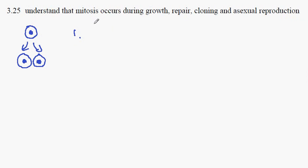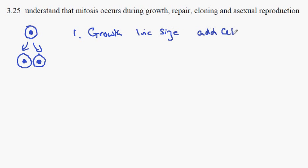The first occurrence to look at is growth. In multicellular organisms, one of the ways to grow and increase in size is to add cells. Mitosis is just such a process — cells dividing and the cell number increasing.